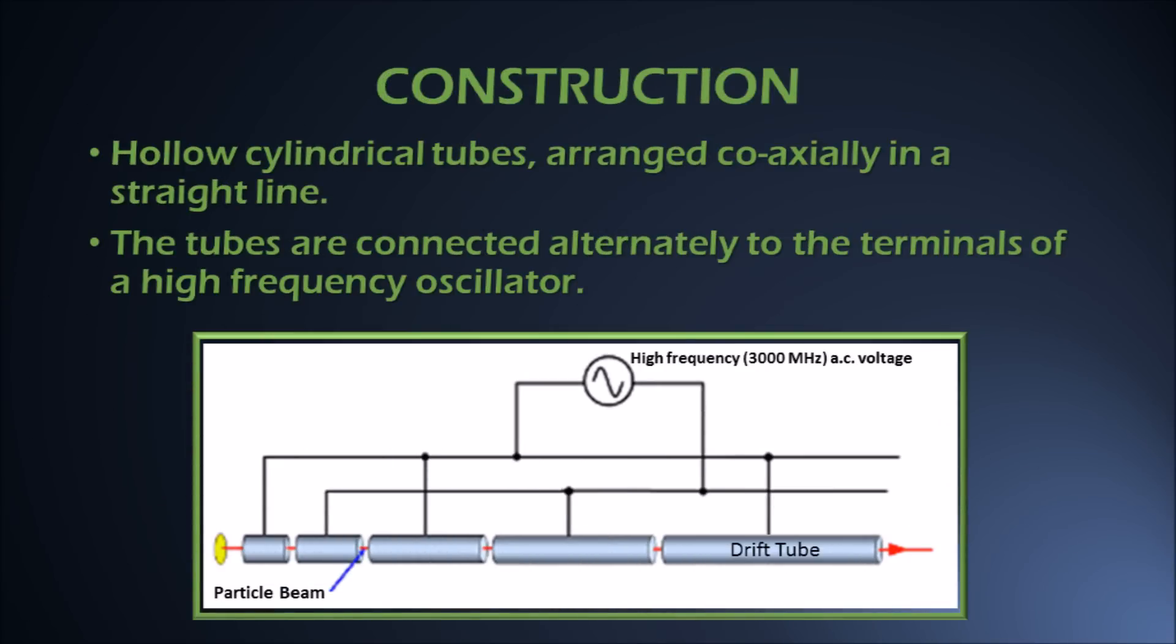Now let us come to construction of linear accelerator. It consists of a fixed number of hollow cylindrical tubes which are arranged coaxially in a straight line. Starting from the source of particles, length of the cylindrical tubes is logically kept in the increasing order.